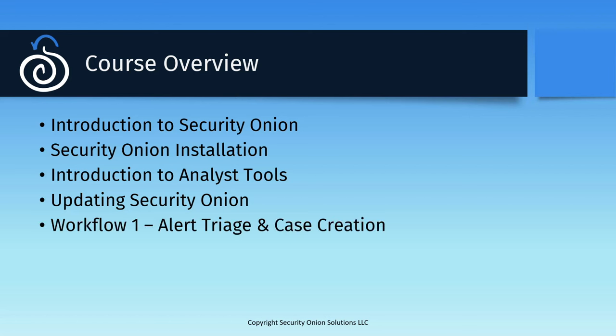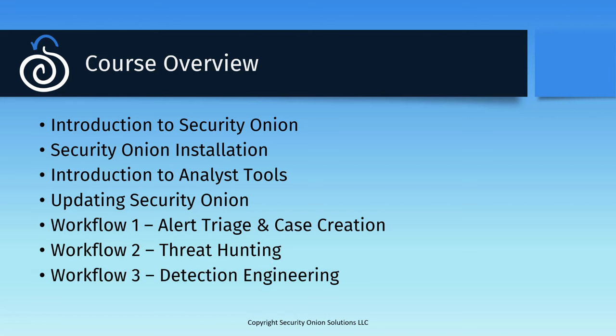Finally, we'll walk through the three main workflows of Security Onion. First, how to use the alert and case tools to triage and drill down on alerts, gather evidence, and track investigations. Next, how to use Hunt and dashboards to perform threat hunts using the stockpile of data you've gathered in your Security Onion instance. And finally, detection engineering techniques for taking the output from those first two workflows and turning it into new alerting rules for your environment, so if that malicious or suspicious activity shows up again, you'll be immediately aware of it.